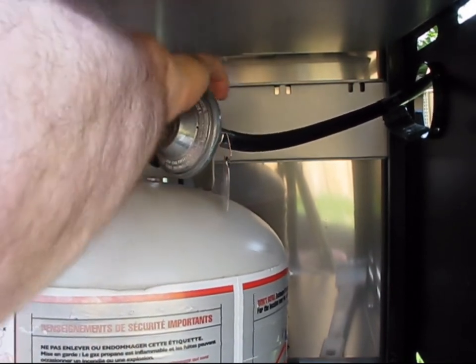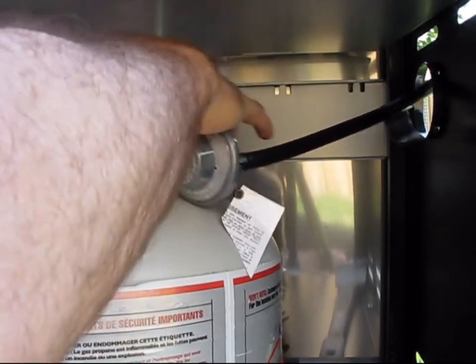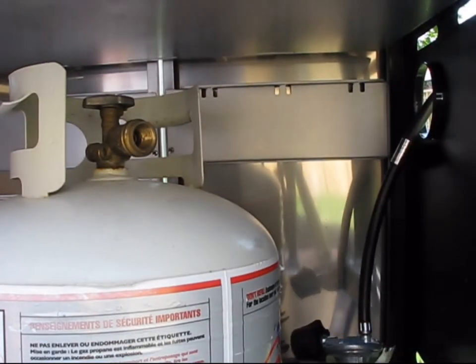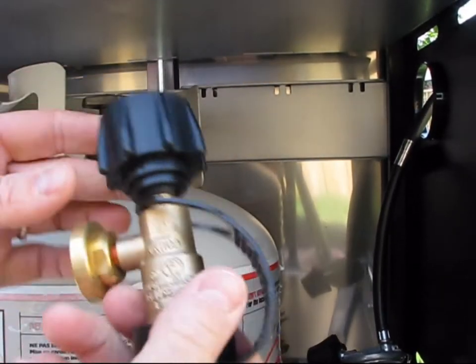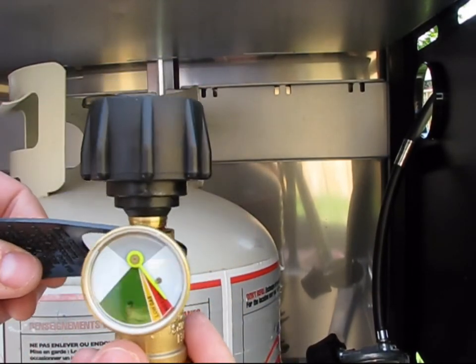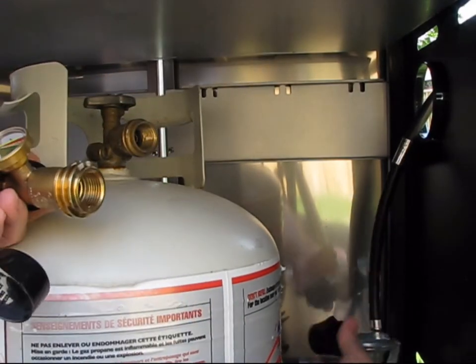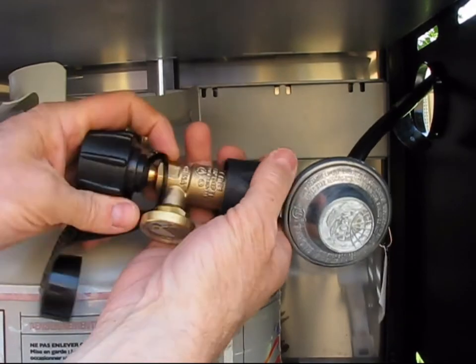So we're going to loosen the regulator, simple enough. Then we're going to take the gauge and attach it to the regulator first. It's all hand-tightened.